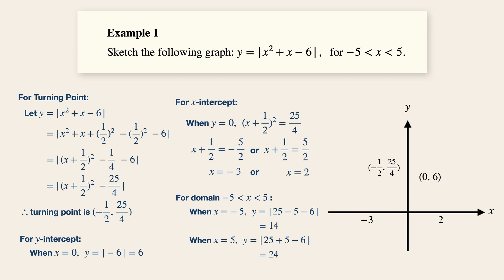And also, we could include the domain, how far to the left and how far to the right that this sketch of the graph will go, which is minus 5, 14 and 5, 24.